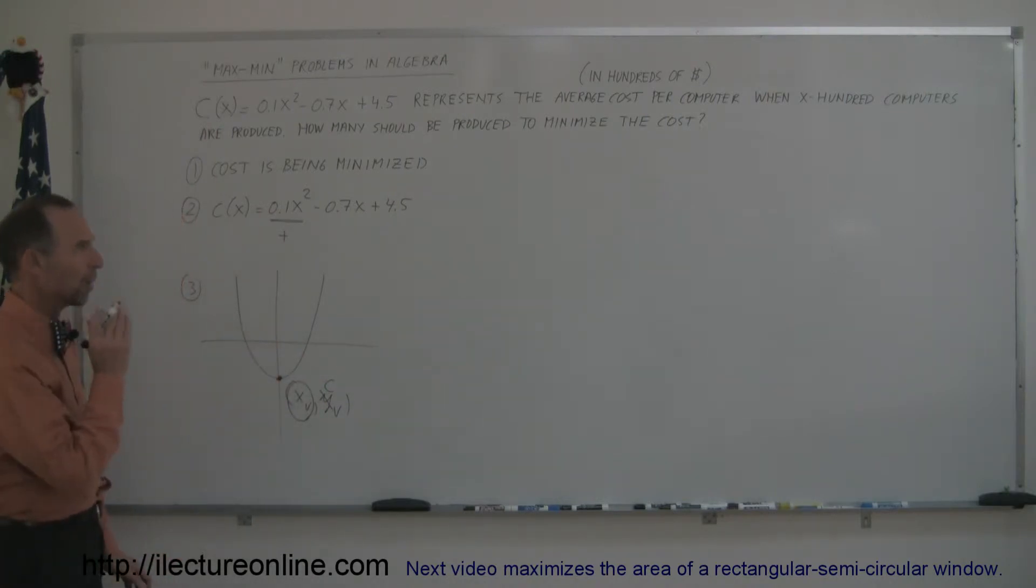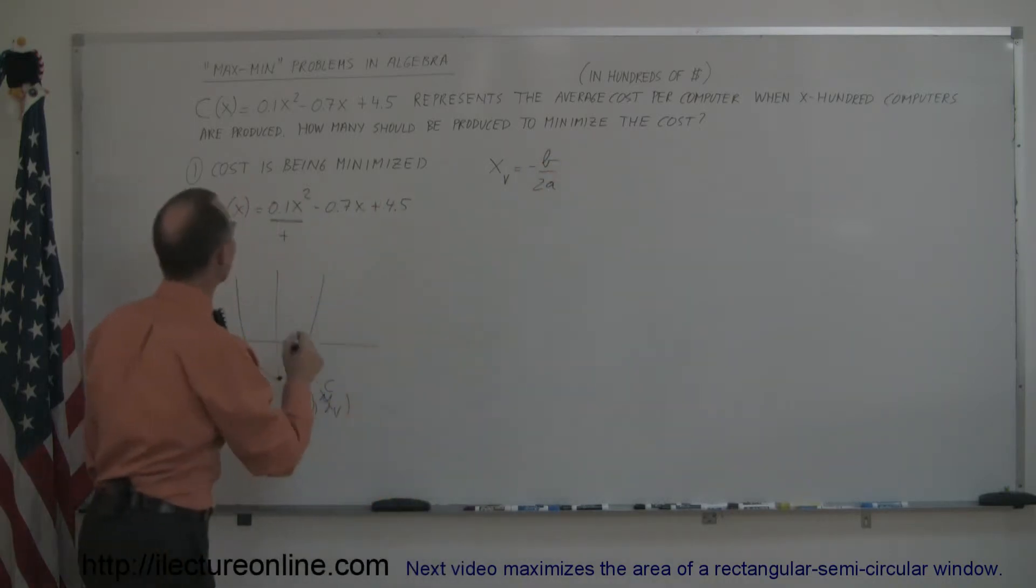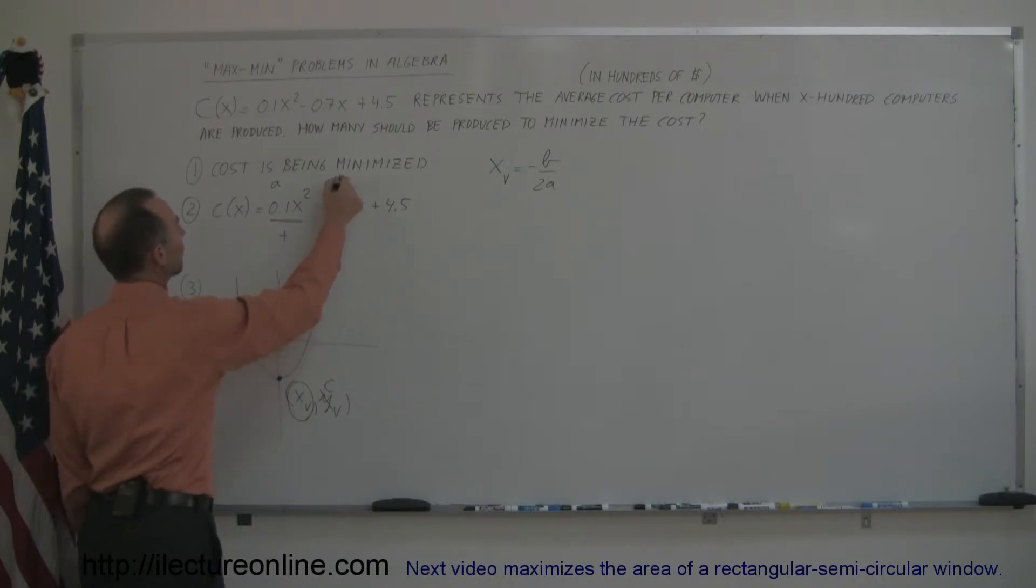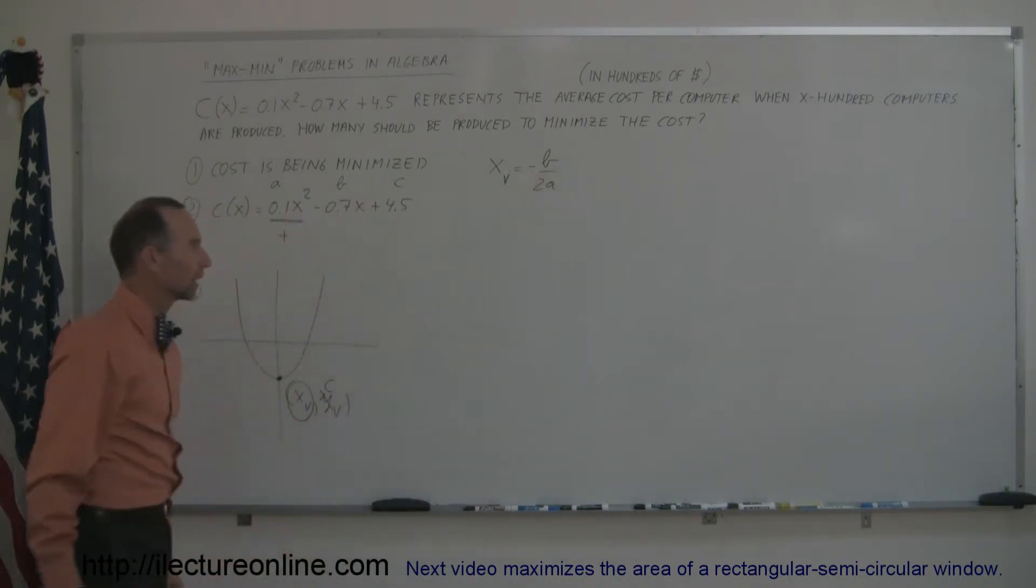And if we remember right, the equation to find the x-coordinate of the vertex, x of v, that's equal to minus b over 2a, realizing that a is the coefficient of the x squared term, b is the coefficient of the middle term, and c is the coefficient of the constant. But of course, we don't need c in this particular case.